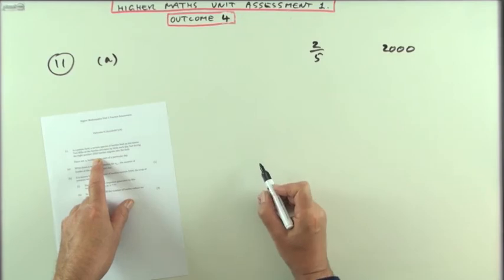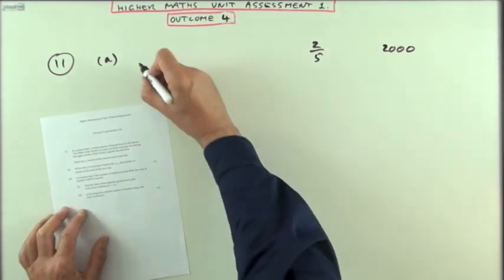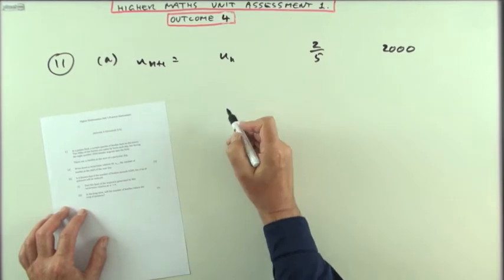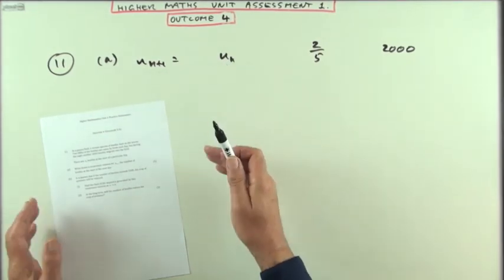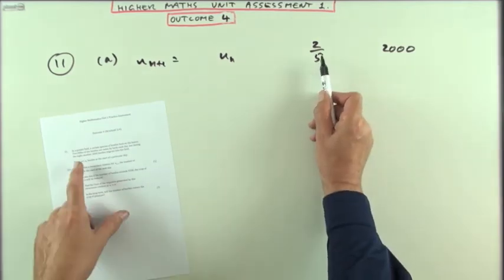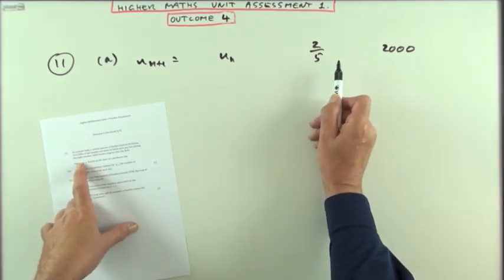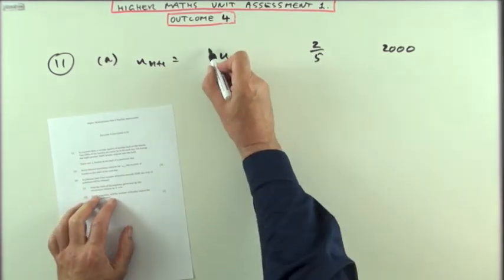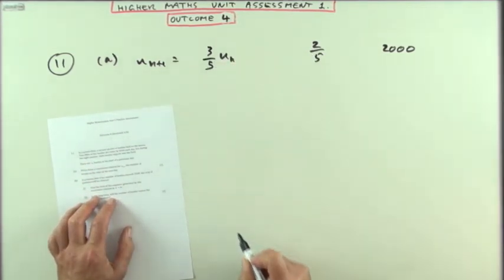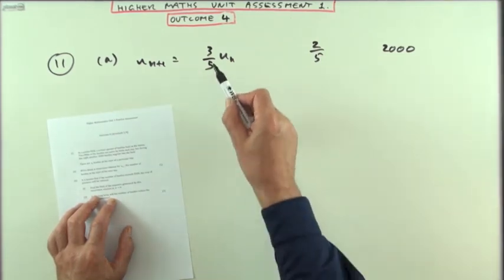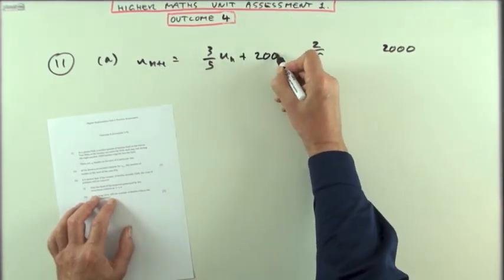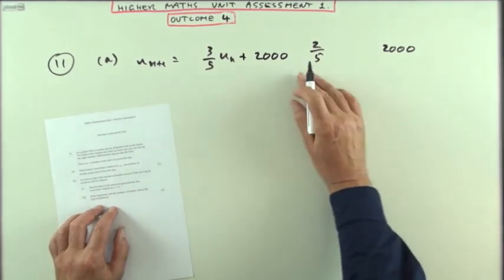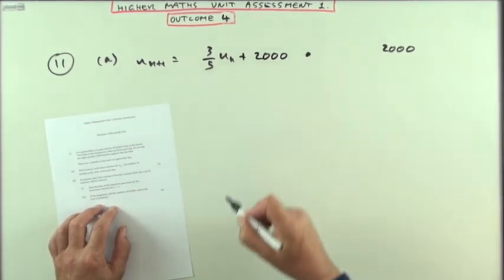But watch what you're doing with this two-fifths. You have to think, in order to get this recurrence relation, what am I going to multiply UN by to find the resulting amount? Now, it's not two-fifths, it's two-fifths that's disappearing. And if you take two-fifths off of something, it means you're left with three-fifths. So, the multiplying number is actually three-fifths. The following day, there'd only be three-fifths of the beetles left. Except, another two-thousand comes swarming in. So, that would be the mark for part A.